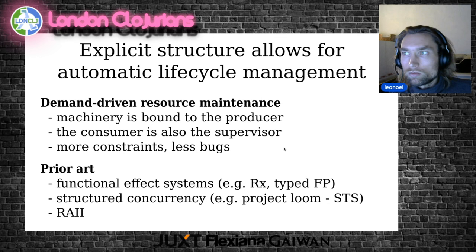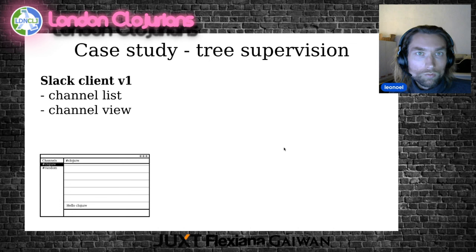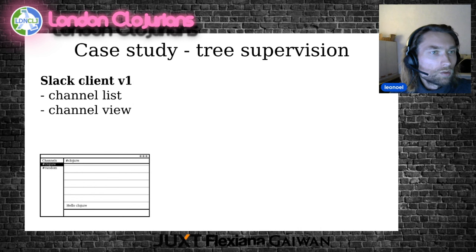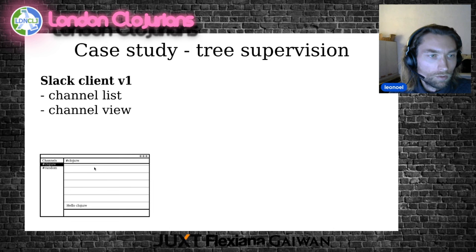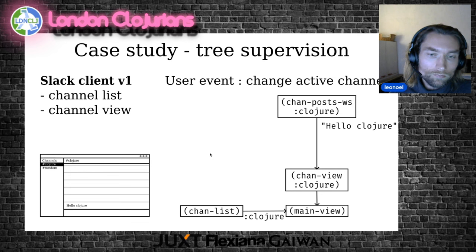So what does it look like in a practical use case? I have an example for you, which is a Slack client. We are going to see how it works and what the tree supervision looks like. The first version of our Slack client will have a channel list and channel view. On the left you can select the current channel and on the right you are viewing the current channel. The supervision tree looks like this.